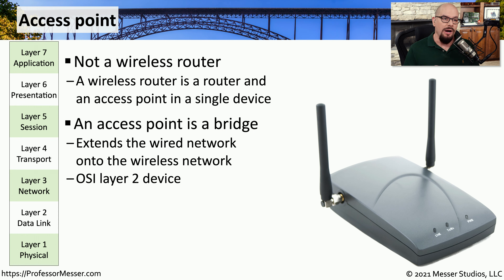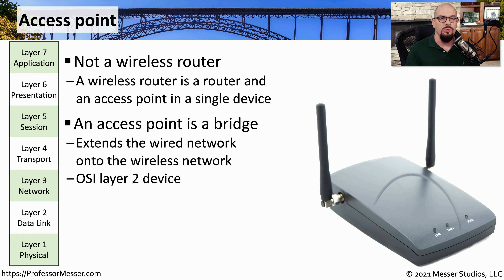As mentioned earlier, a wireless access point is a bridge, so we are able to bridge between our wired ethernet and our wireless 802.11 networks. These access points make forwarding decisions between the wired and wireless network based on the MAC address — therefore, we refer to them as OSI Layer 2 devices.